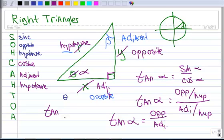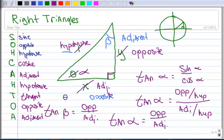Likewise, the tangent of beta is the same formula - the opposite to beta over the adjacent. So in the acronym, T stands for tangent, O stands for opposite, and A stands for adjacent.